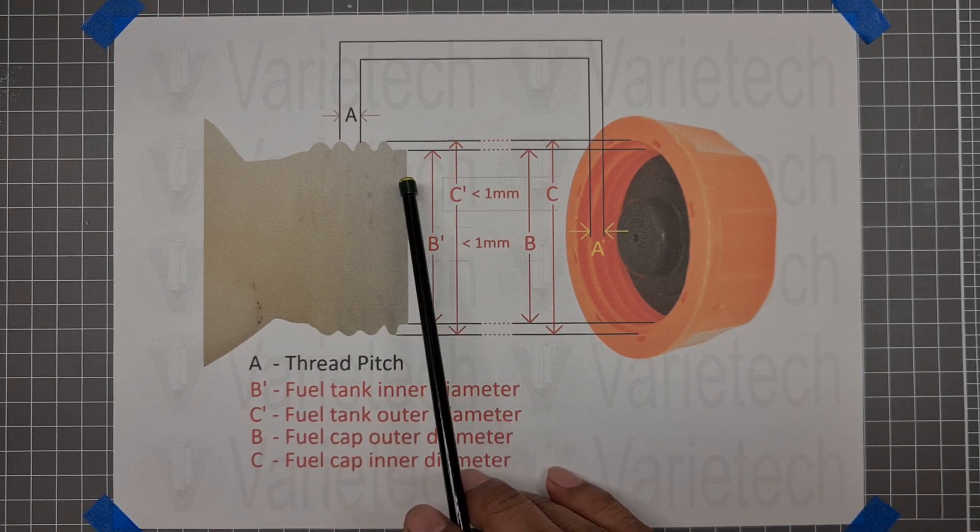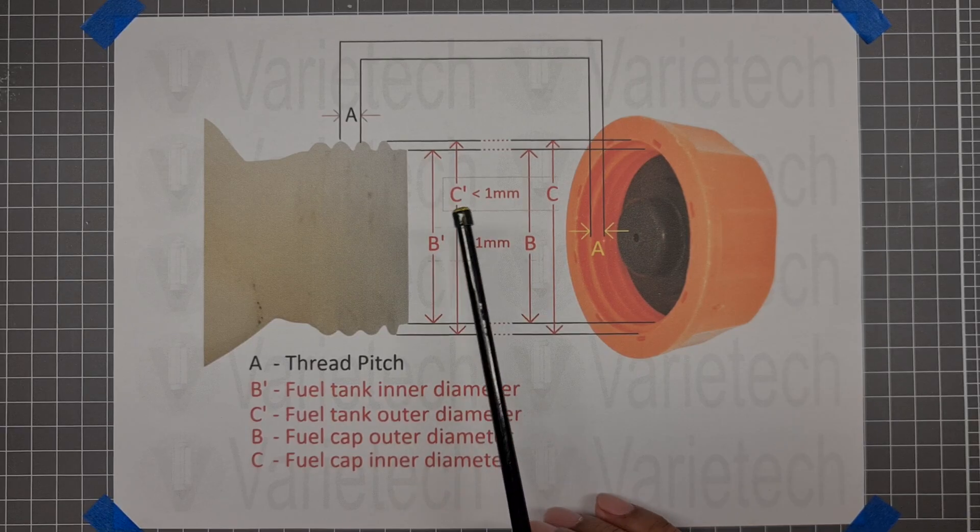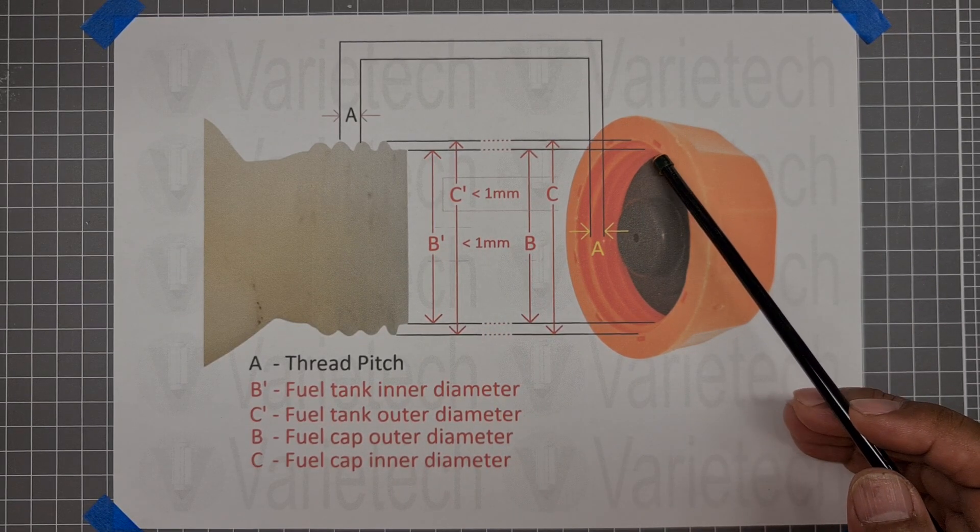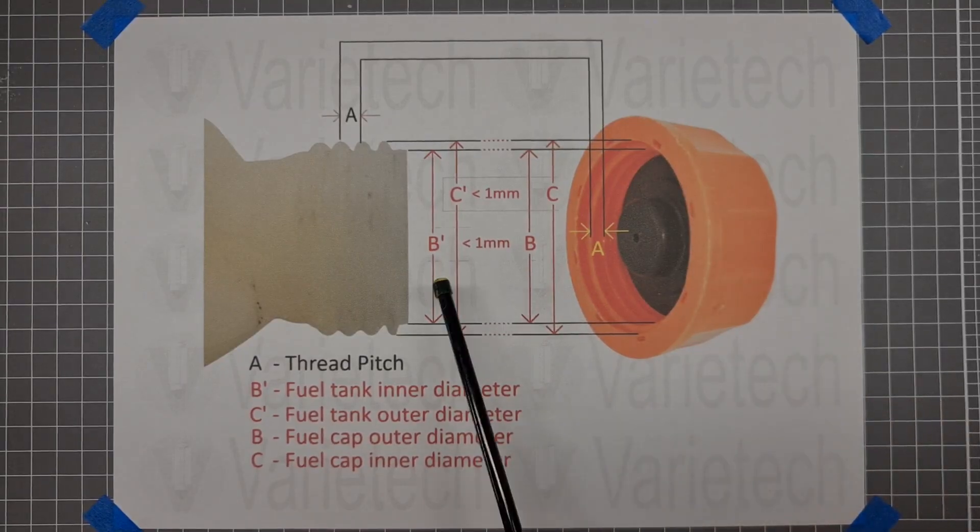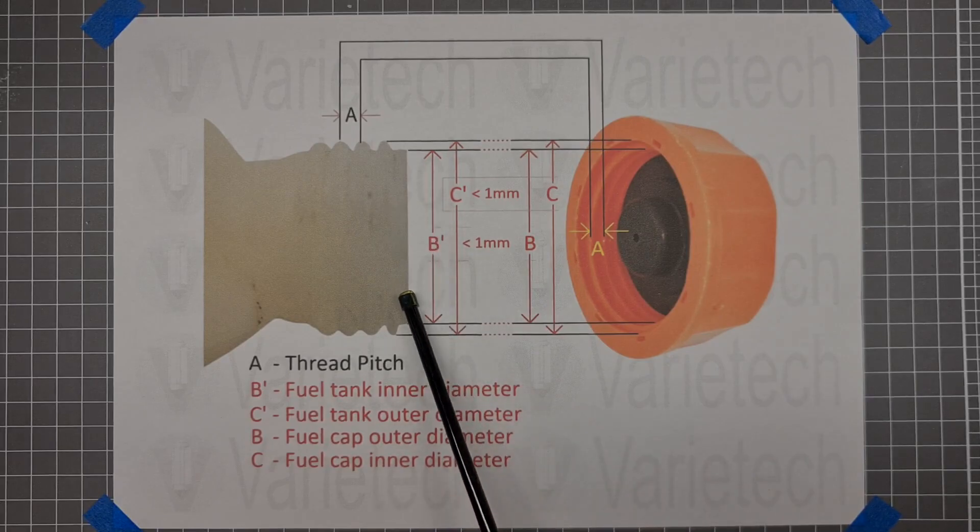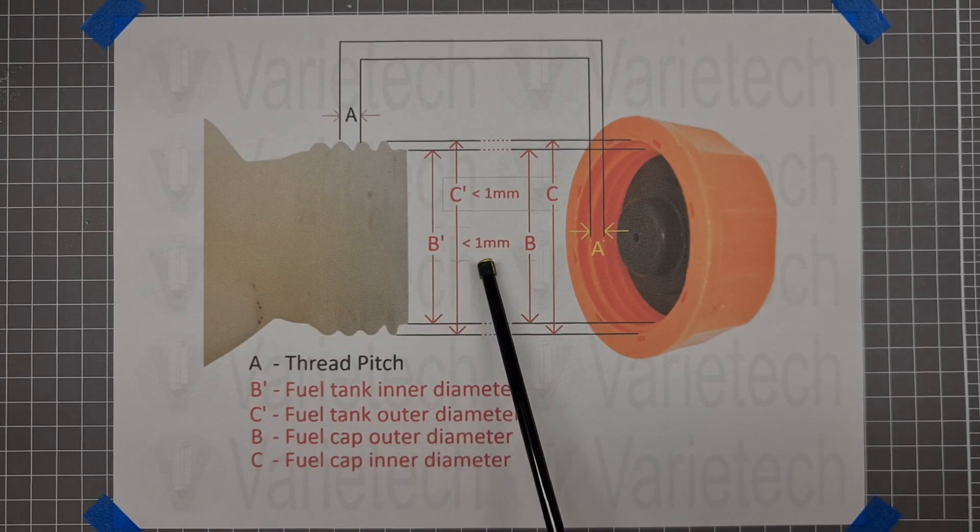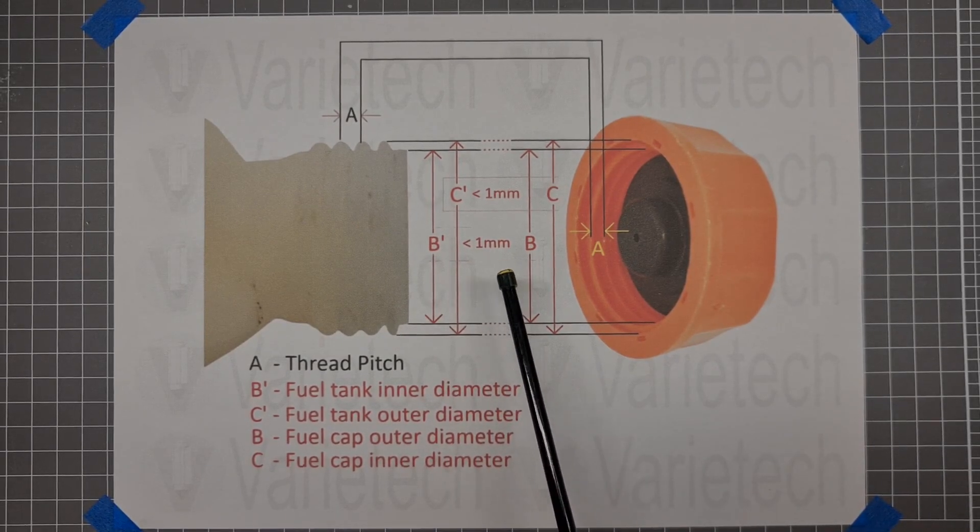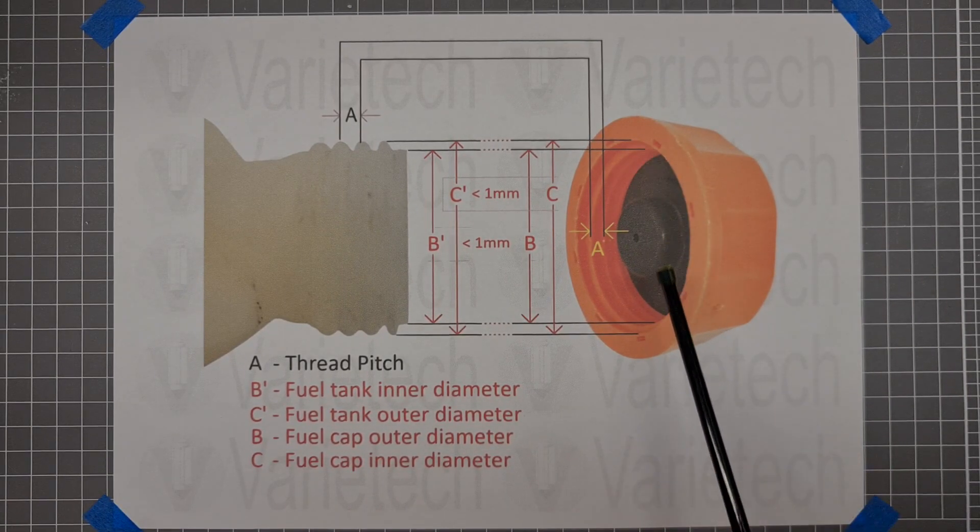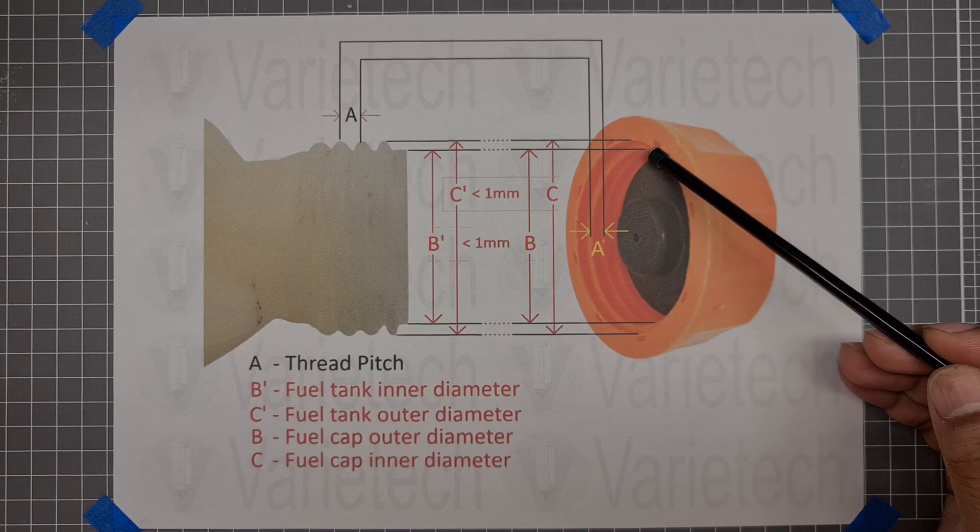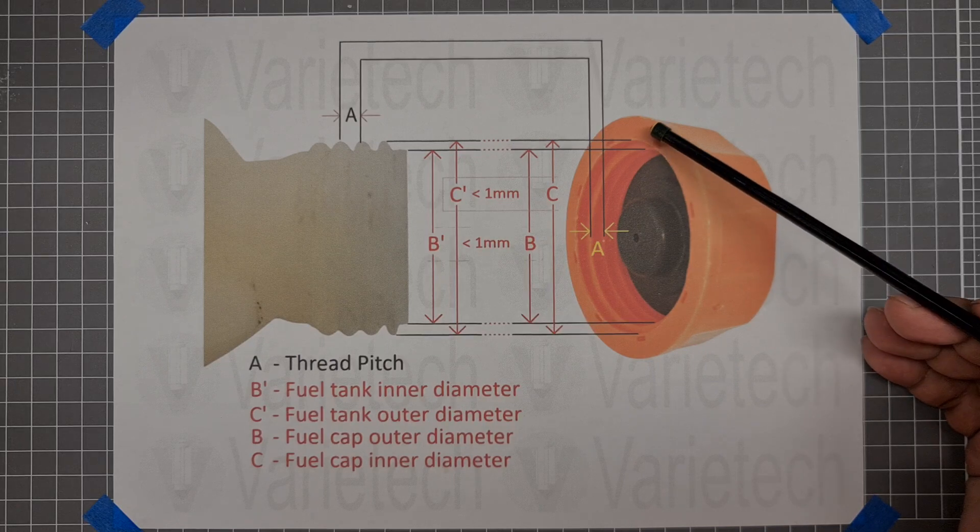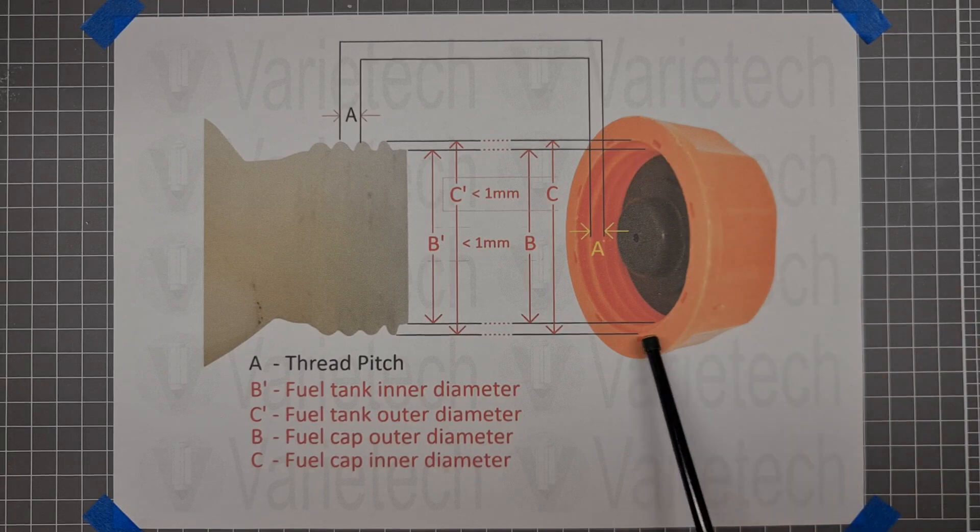So most of the time, the C prime is less than one millimeter of the inner diameter of the fuel cap, and also the B prime, which is the inner lip or inner diameter of the fuel tank, is usually less than one millimeter of the outer diameter of the fuel cap. So the C prime is less than one millimeter of the inner diameter of the fuel cap from here to here.